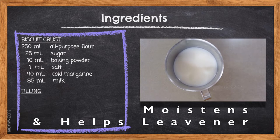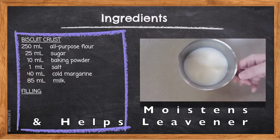85ml Milk. Milk serves two purposes: one, it's the liquid needed to activate the baking powder, and two, it's the liquid needed to activate gluten within the flour, creating our structure. The milk helps bring our dough together so that we can knead it and form our soft biscuit layers.